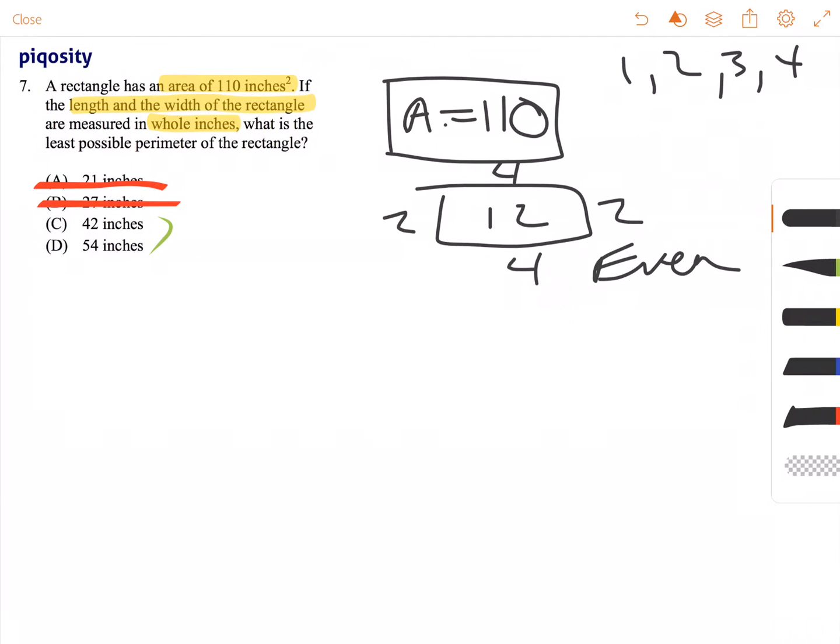So to start, we need to figure out the factors of 110. Some simple factors of 110 might be 55 and 2. So 2 times 55 is 110, and if we have those as the measurements of this rectangle, 55 and 2, the perimeter of that particular rectangle, 55 plus 2 is 57, 57 plus 57 is 114.